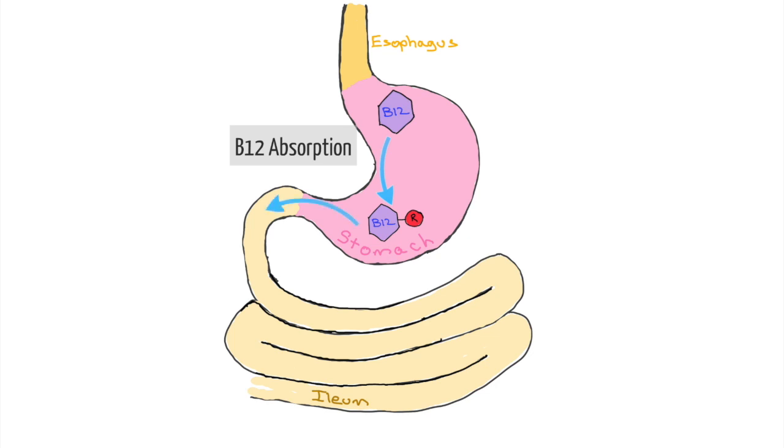In the small bowel, pancreatic proteases, which are enzymes, break apart the B12 and R-protein complexes. During this process, parietal cells, which are located in the stomach, secrete a protein called intrinsic factor. Intrinsic factor travels into the small bowel where it binds to the newly freed B12 to form a B12 intrinsic factor complex. The B12 intrinsic factor complex is absorbed at the terminal ileum by passive transport and by pumps that use ATP or energy to push B12 into the cells that line the bowel. Each step in this process is important and we will talk about how different diseases can lead to B12 deficiency based on different steps in this process.